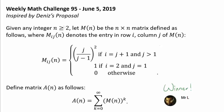Given any integer n greater than or equal to 2, let capital M of n be the n by n matrix defined as follows, where M sub ij of n denotes the entry in row i, column j of M of n. The desired i,j entry is j over (j minus 1) squared if i equals j plus 1 and j is greater than 1, and it is 1 if i equals 2 and j equals 1, and 0 otherwise. So if n equals 4, let's try constructing M of 4 using these conditions.